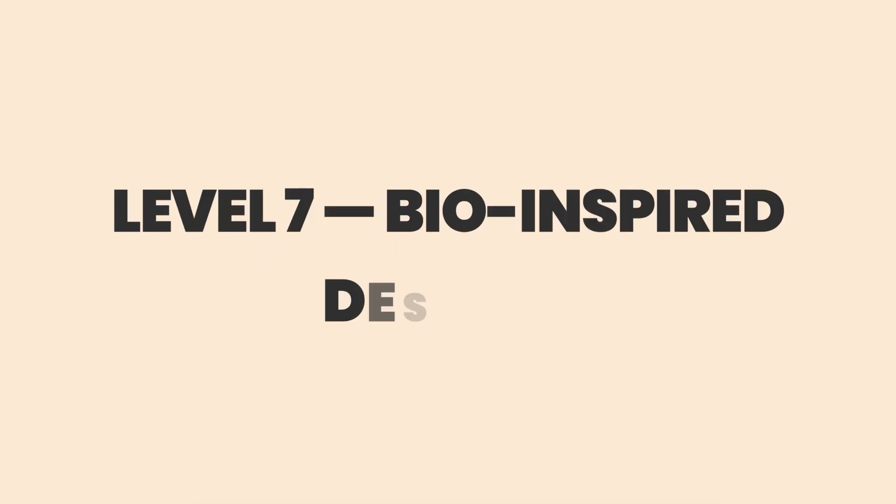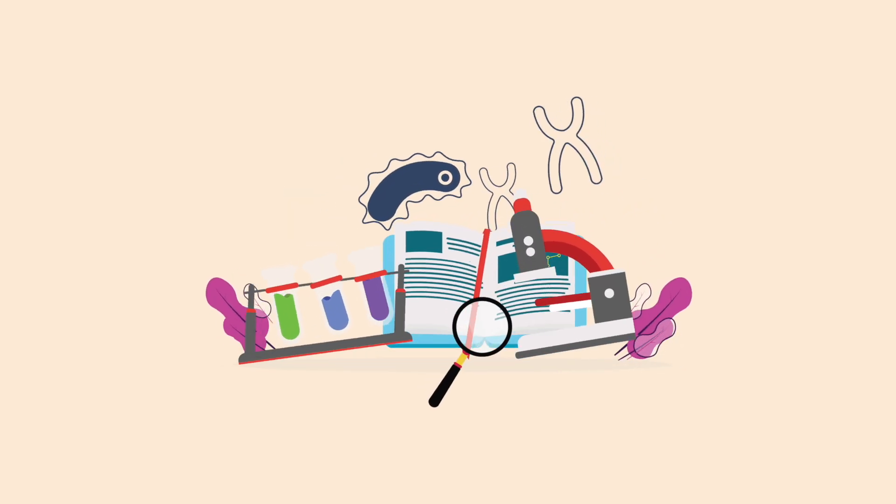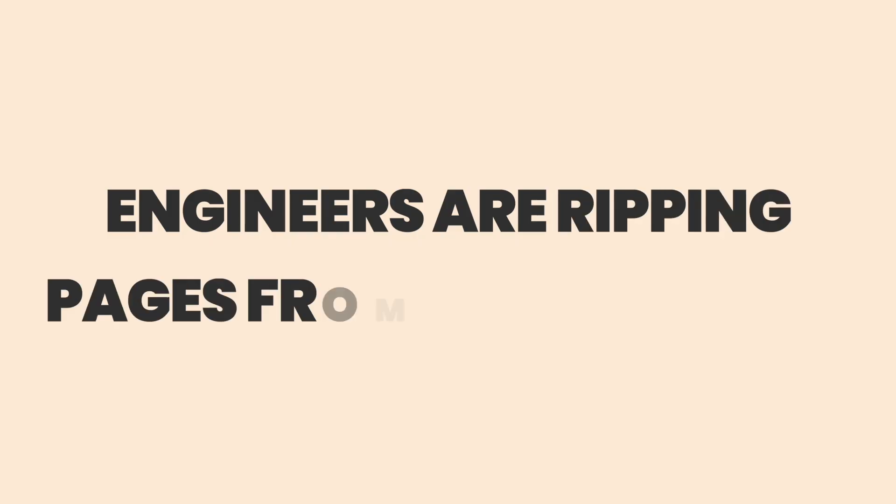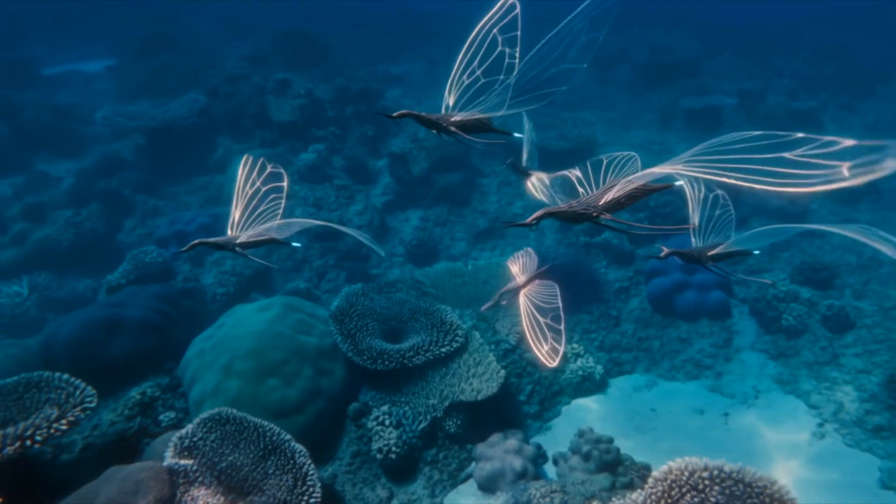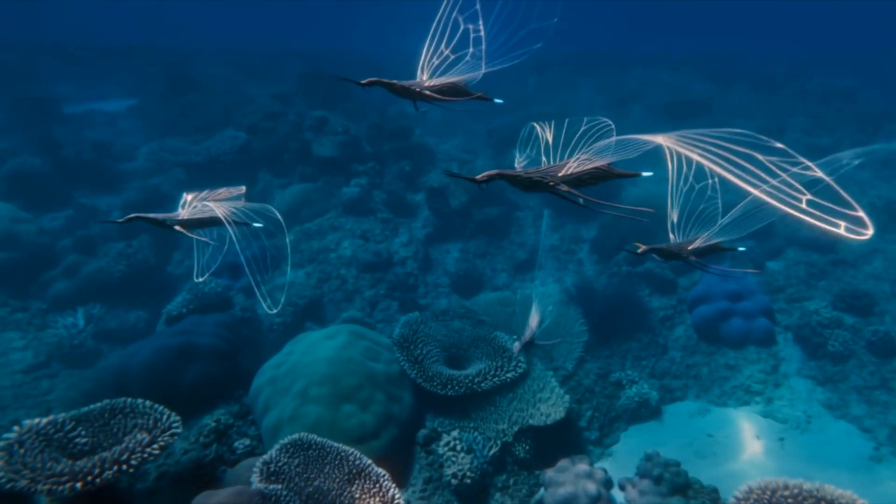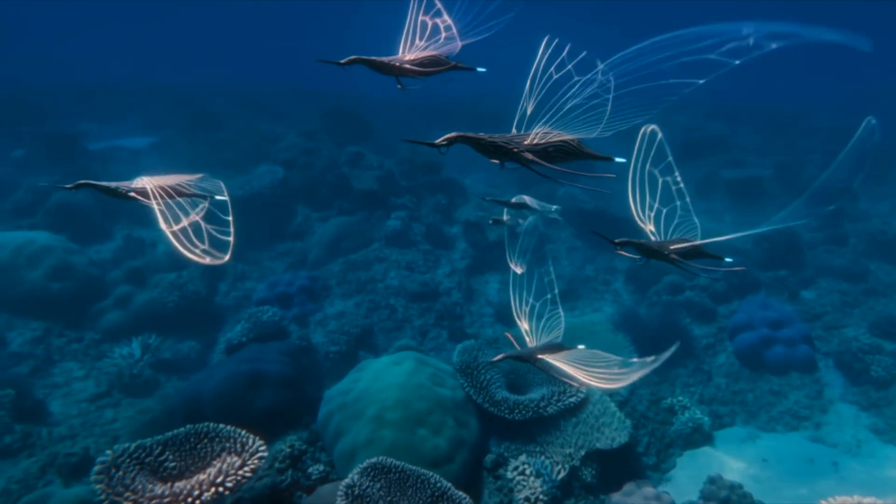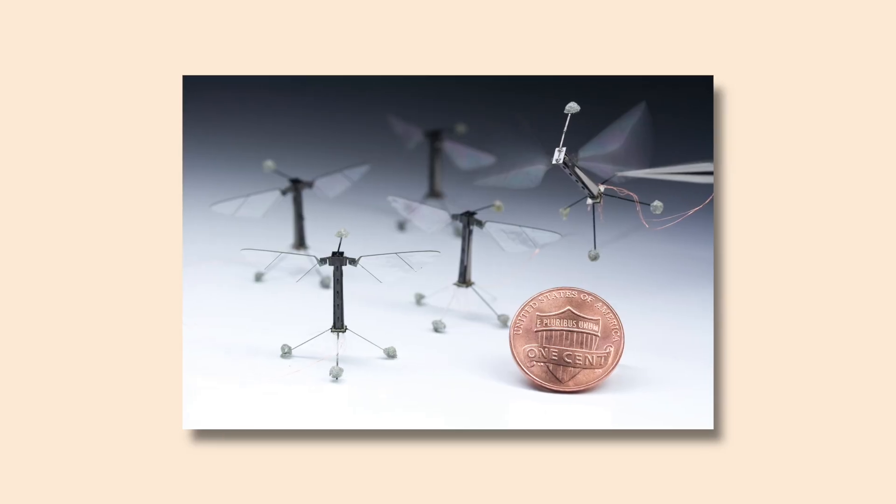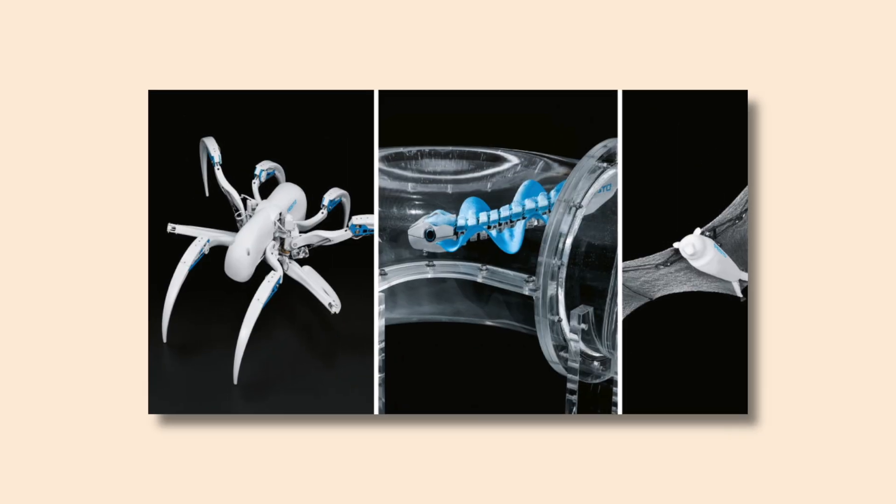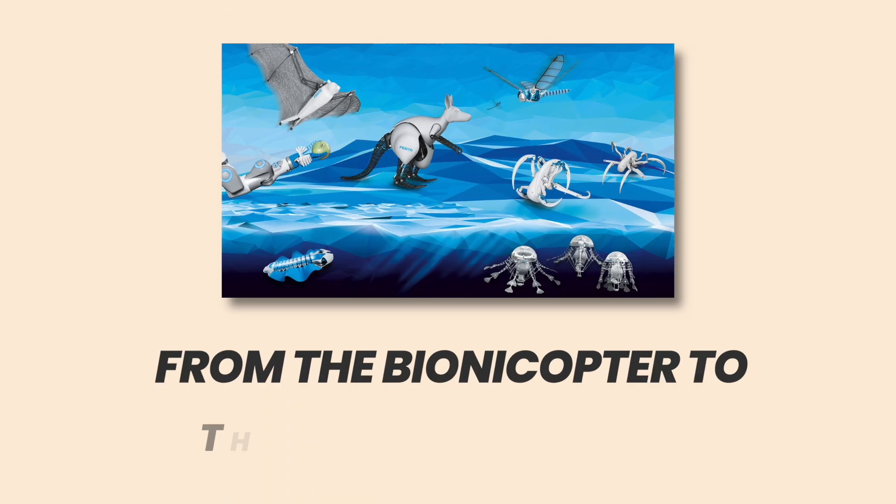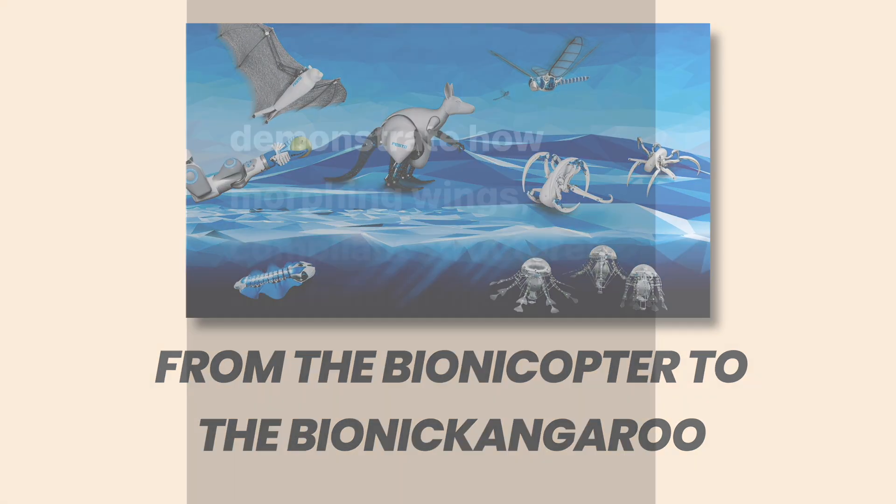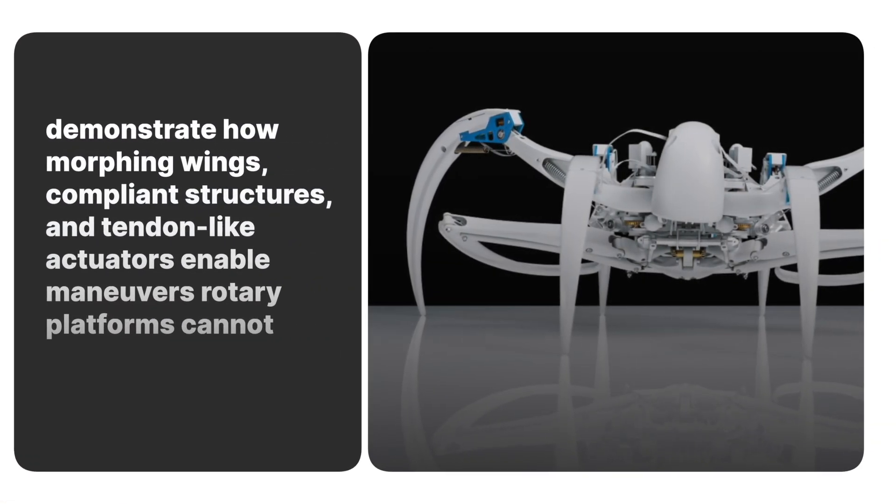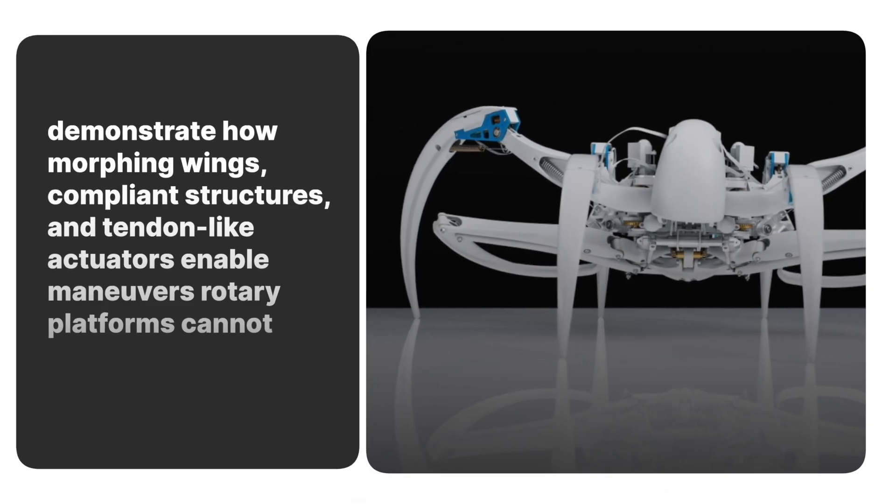Level 7. Bio-inspired designs. Biology has built flight systems through 500 million years of R&D. Engineers are ripping pages from that manual. Flapping wing drones, ornithopters, emulate bird and insect aerodynamics for extreme agility and low speed efficiency in cluttered environments. Harvard's Robo-B experiments and Festo's Bionic Learning Network, from the Bionic Opter to the Bionic Kangaroo, demonstrate how morphing wings, compliance structures, and tendon-like actuators enable maneuvers rotary platforms cannot.